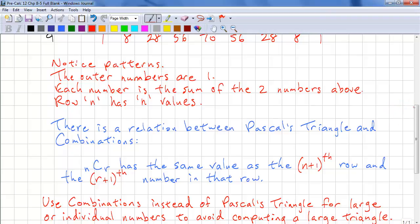We can use combinations instead of Pascal's triangle for large or individual numbers to avoid computing a large triangle.